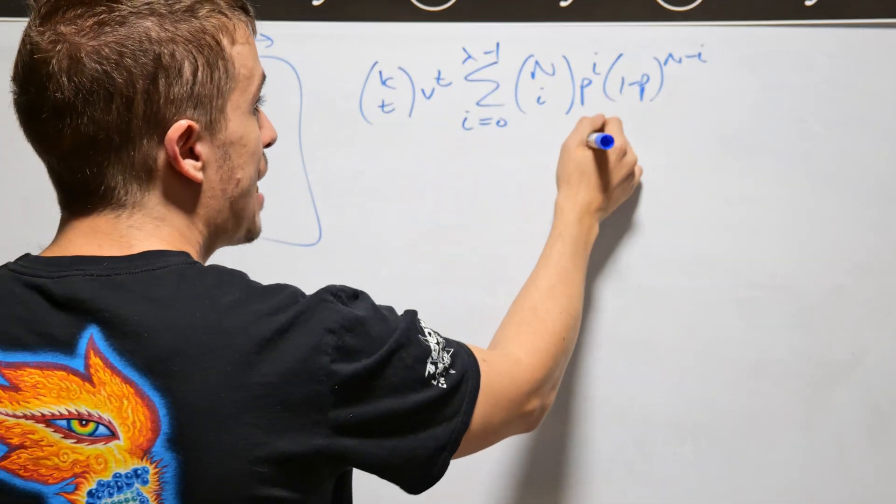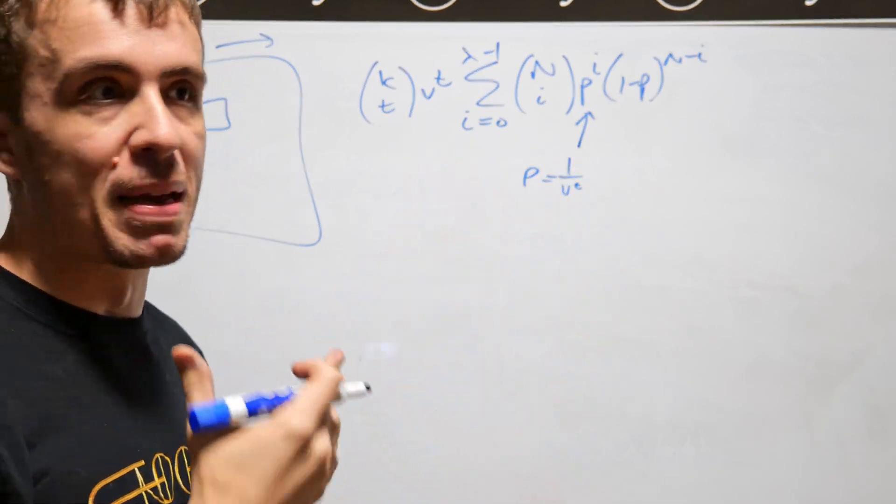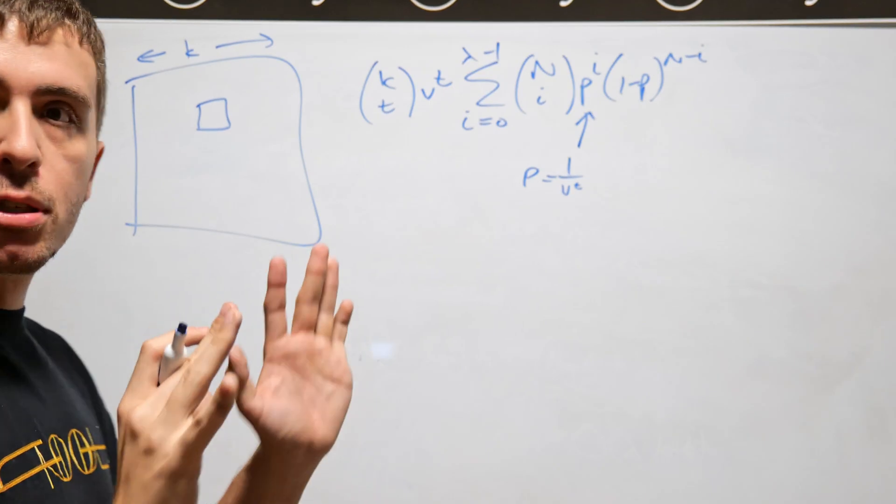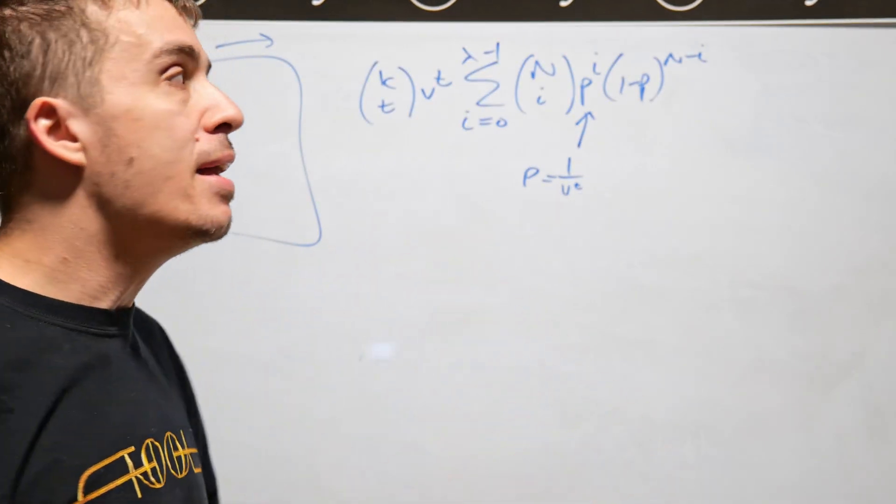that's going to be the sum from i equals zero to lambda minus one of n choose i, p to the i, one minus p to the n minus i. This is a fairly well-known sum. And p here is one over v to t. And I'm using p here just to make things easy.